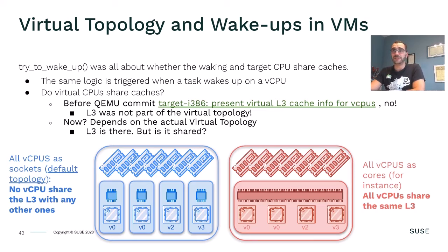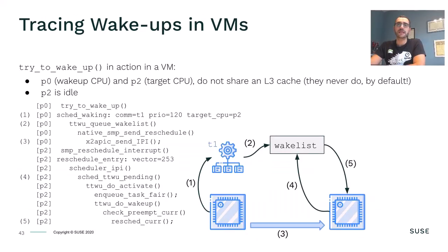The fact that we have an L3 cache in the virtual topology does not mean it is shared between any particular pair of vCPUs — that depends on the virtual topology. With the default virtual topology, no virtual CPU shares any cache with any other. With a different topology where all vCPUs are defined as cores of the same socket, they do share. Tracing the wake-up of a task inside a VM with the default topology means that no matter which are the wake-up CPU and target vCPU, they will never share an L3 cache. So the trace is similar to the bare-metal case with no shared L3, and we see the wake-list there. The inter-vCPU notification mechanism does require an IPI in this case.